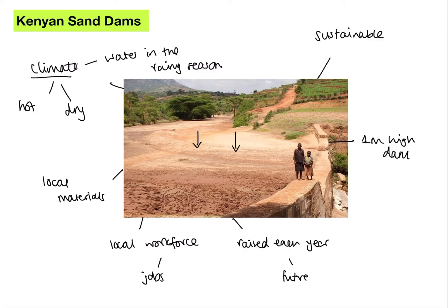If we categorize these in terms of sustainability: environmentally sustainable — local materials are great; sustainability for people — the local workforce provides jobs; and economically, if it lasts into the future it saves spending large amounts of cash. So Kenyan sand dams help us meet sustainability on three accounts. Remember, when we talk about sustainability we're not just saying it's good for the environment — we also want sustainability for the economy and for people. For something to be truly sustainable it needs to hit all three. I hope you found this video helpful, and as ever, ask your geography teacher if you've got any questions.